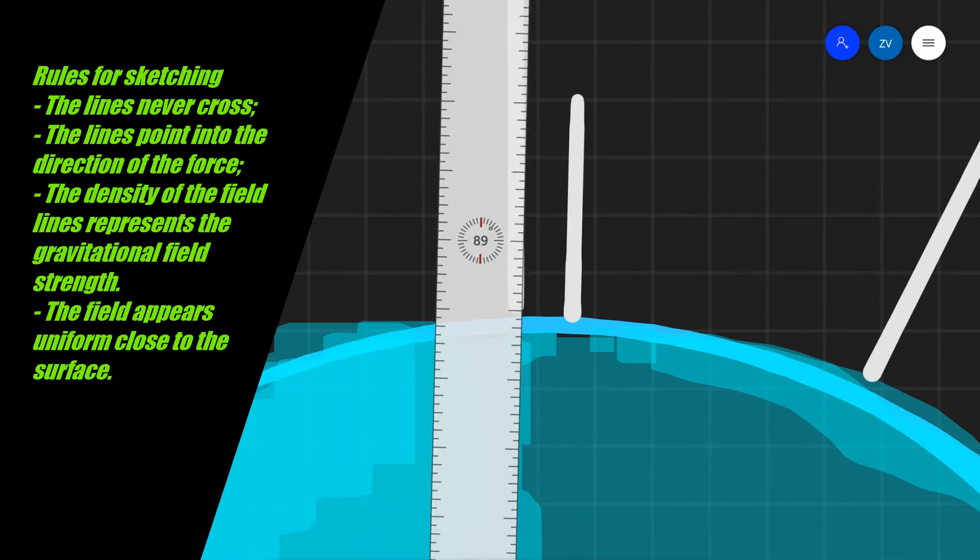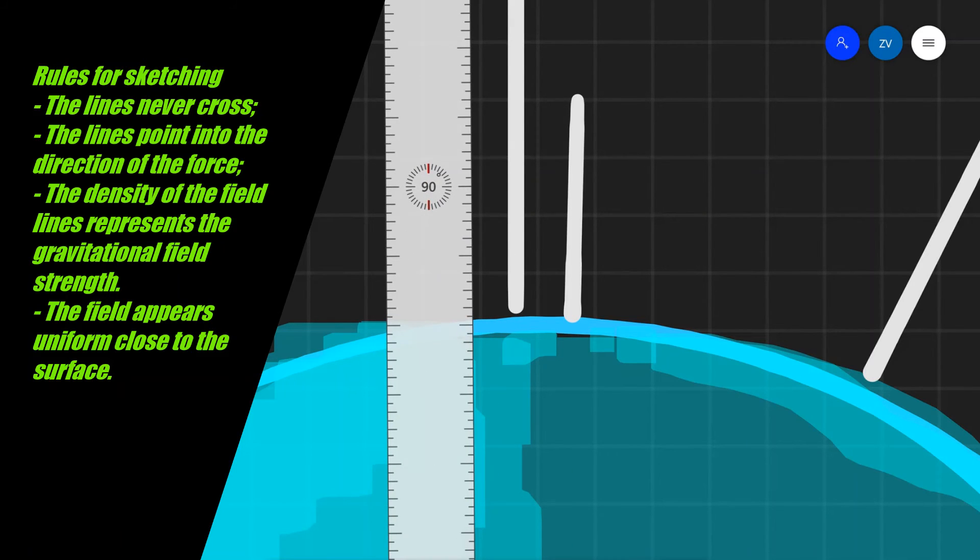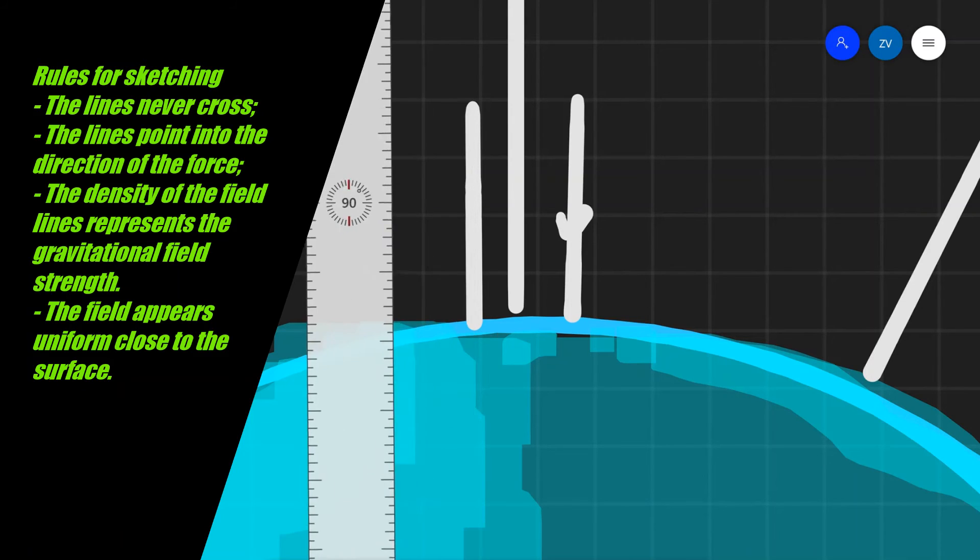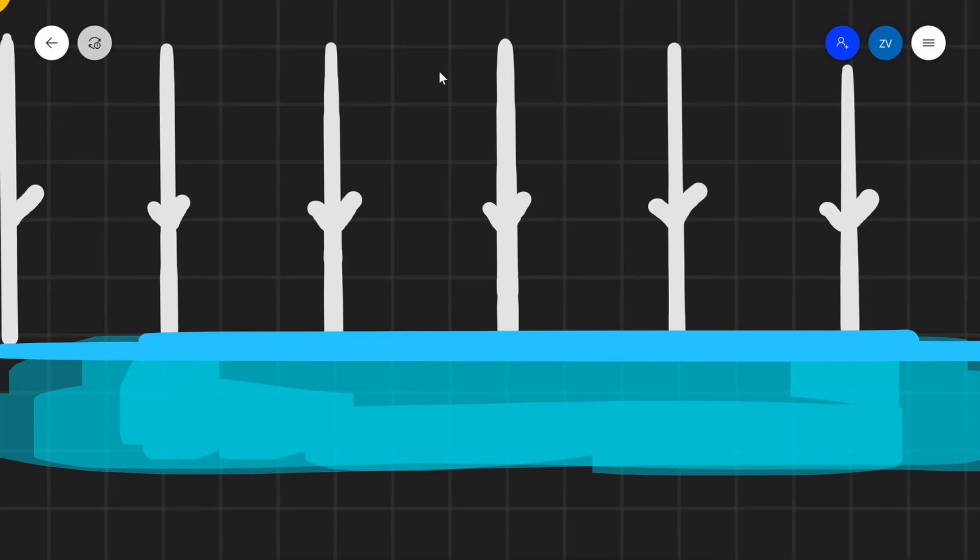Let's look at this in a little bit more detail. I'm just going to finish drawing these lines as well. So quite close to the surface of a planet, the field appears perfectly uniform, which means it will consist of parallel, equidistant lines towards the surface.